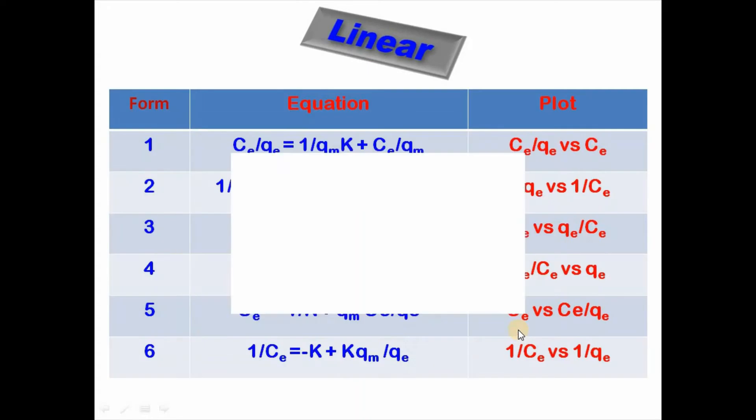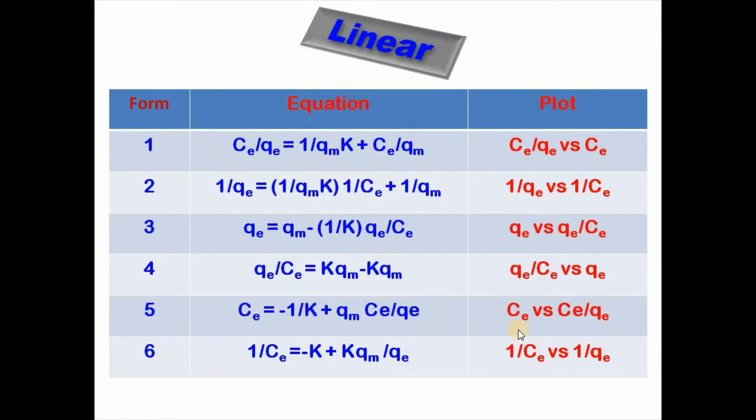Then comes linear. There are six forms of linear Langmuir isotherm model, and these are mentioned here. These are nothing but different forms of writing this equation one into various forms.